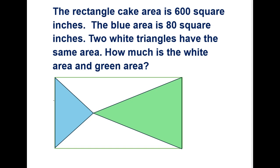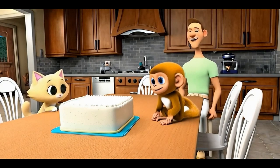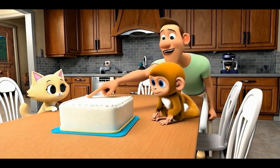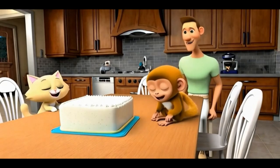The two white parts are for Lily's family and Pepe's family and have the same area. The green part is for John and Mary, the duck couple living beside the creek. Do you know how much is the white part area and green part area?